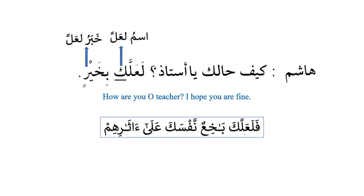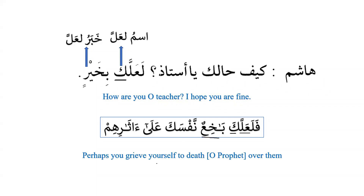The best way to learn Arabic is to learn a new rule and find one example from the Quran or a sahih hadith. A Quranic example on the same pattern: 'fa la'allaka bakhi'un nafsaka' — here la'alla is harfu tawqeed wa nasbin, ka is ismu la'alla, and bakhi'un is khabaru la'alla — 'perhaps you grieve yourself to death, oh Prophet, over them.' As mentioned, in the Quran la'alla is translated as 'perhaps', not as 'I hope' or 'I fear'.